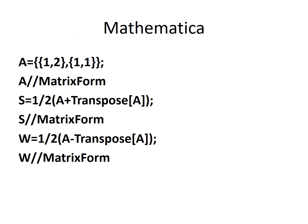In Mathematica, here is the code to find the symmetric component S and the skew-symmetric component W of a general matrix A.